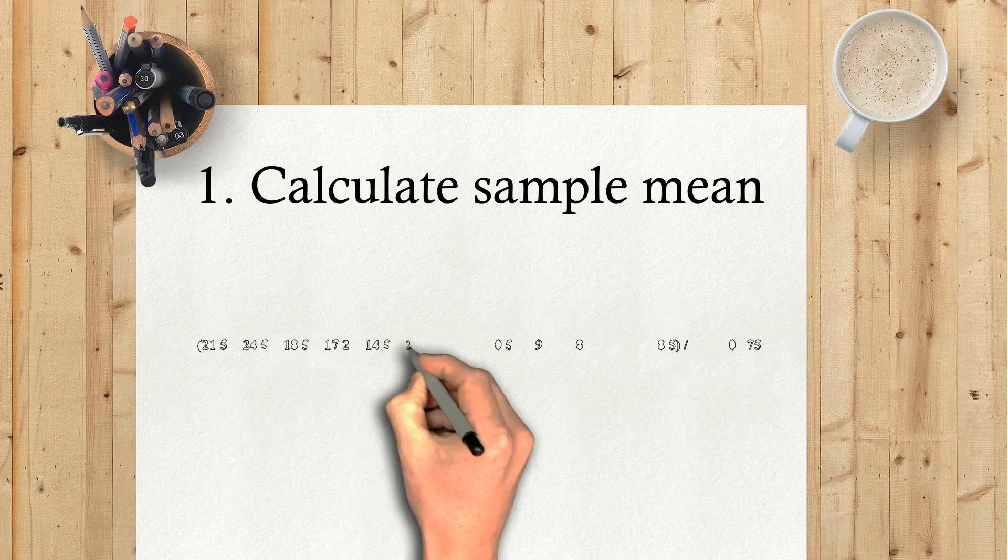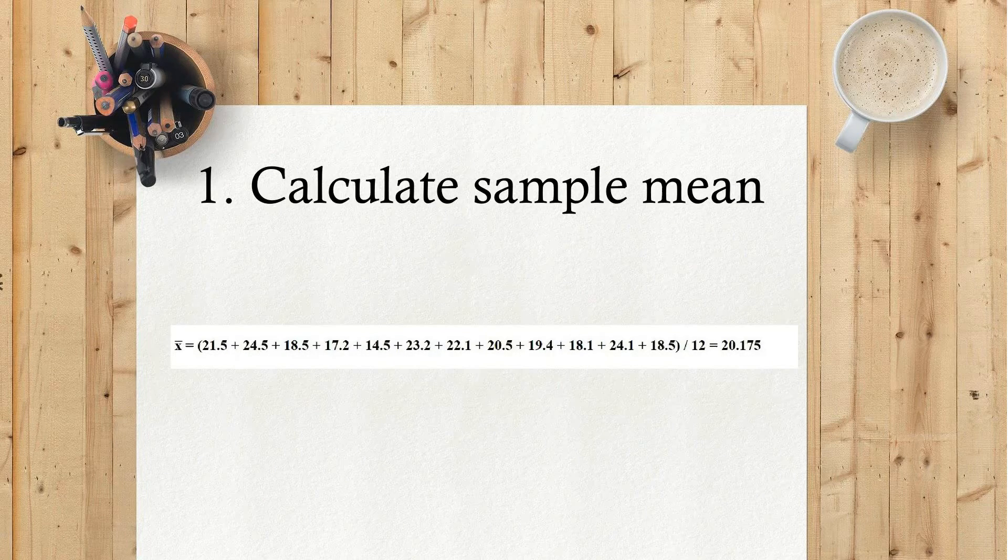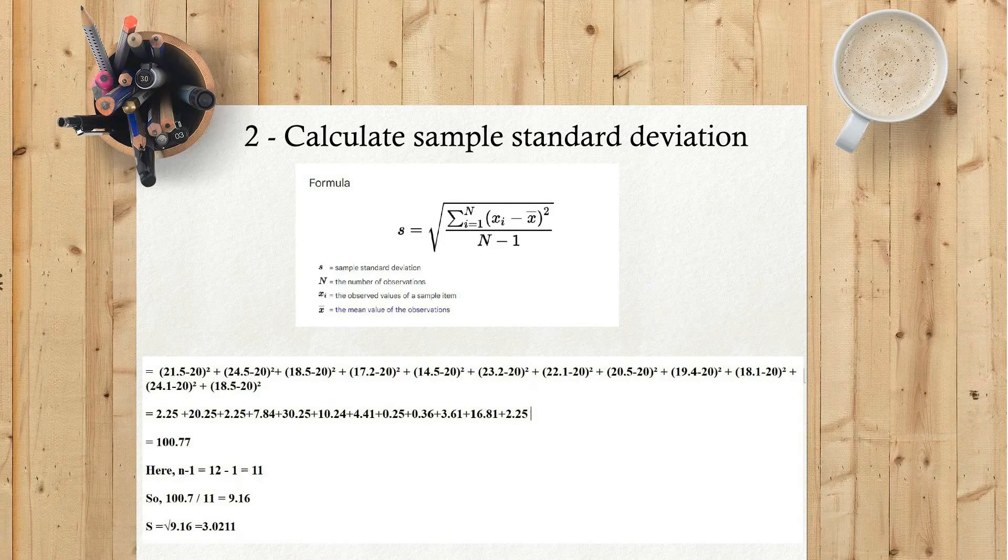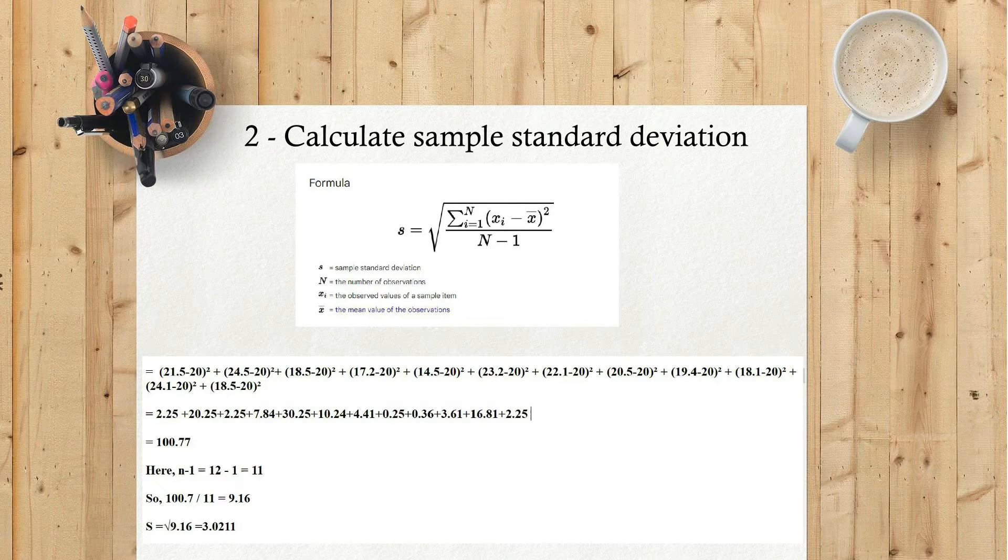1) Calculate sample mean x̄ equals 20.175. 2) Calculate sample standard deviation. Take the sum of the difference of the square of the values. Here n minus 1 equals 12 minus 1 equals 11. So 100.7 divided by 11 equals 9.16. s equals square root of 9.16 equals 3.0211.